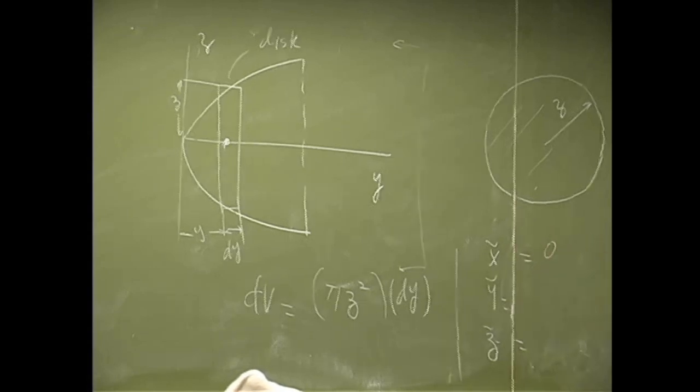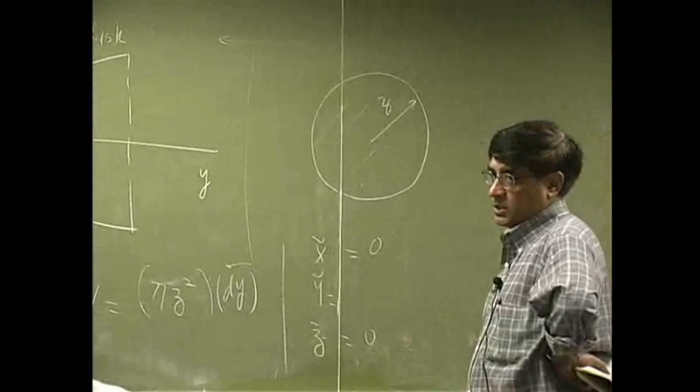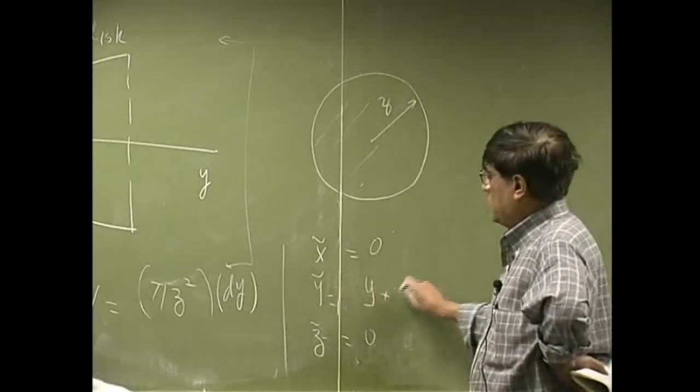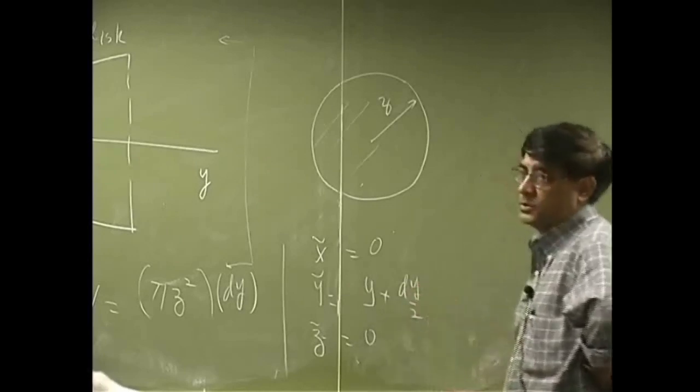This goes to 0, this goes to 0, this one here will be y plus dy over 2.